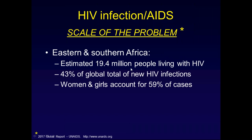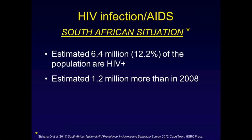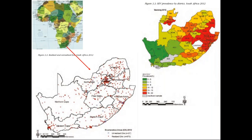In Eastern and Southern Africa, there are 19.4 million people with this disease. 43% of total new infections worldwide occur in this part of the world, and almost 60% of cases are in women and girls. In Western and Central Africa, it's about 6.1 million people living with the disease. It's estimated about 6.4 million, or 12.2% of the world's population, are HIV positive. One has to be au fait with any disease of that prevalence, and the situation hasn't totally reversed even with antiretroviral therapy.